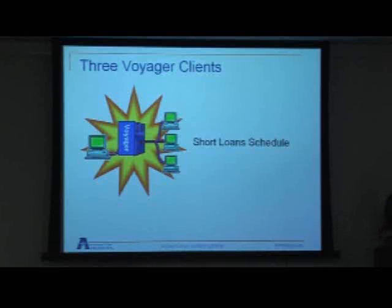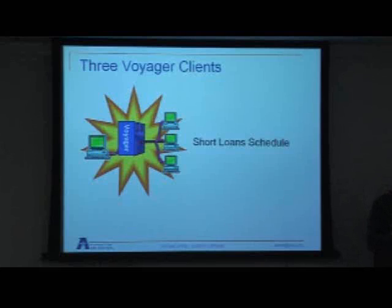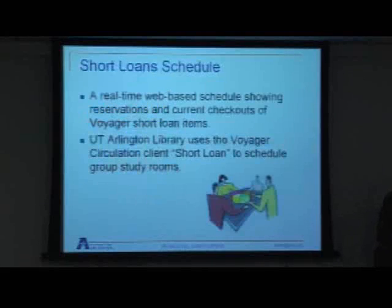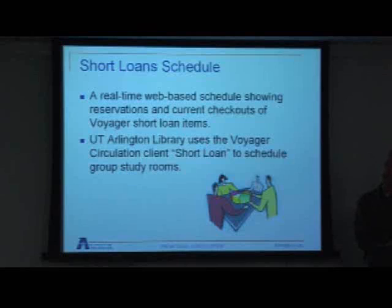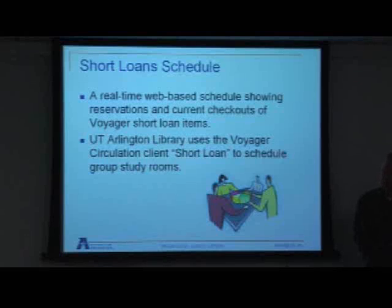A short loan schedule is similar in some ways to a report that gets data from Voyager and exposes it. What makes it better than the new books list is that the new books list was a batch extraction out of Voyager, while this is moving to real-time extraction, so it's incrementally better that way.